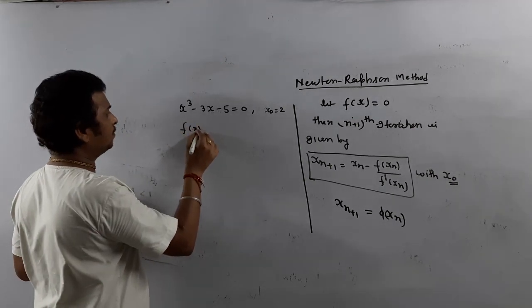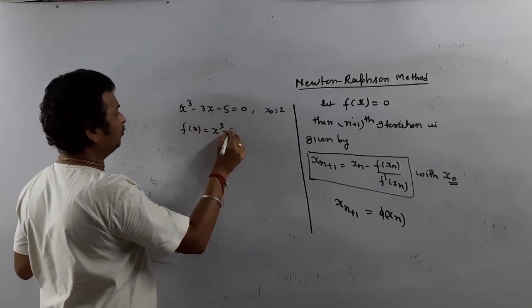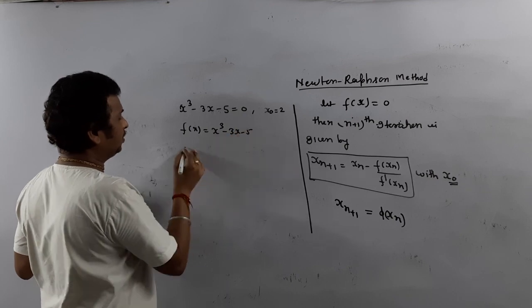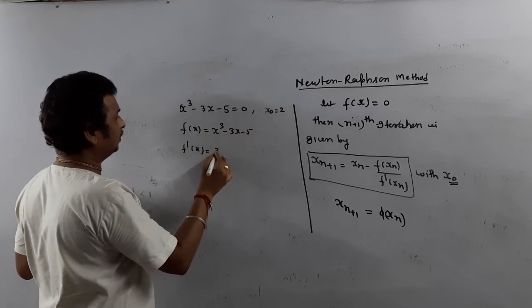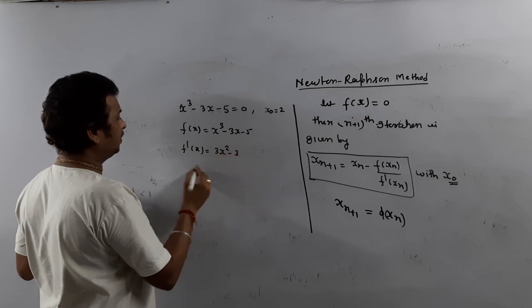What is your f(x)? x³ minus 3x minus 5. What is f'(x)? 3x² minus 3.